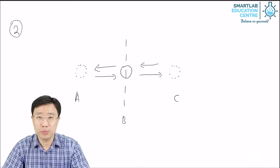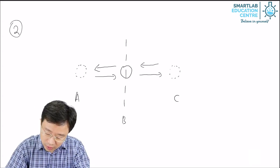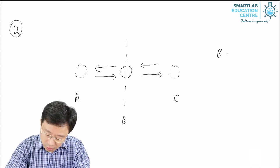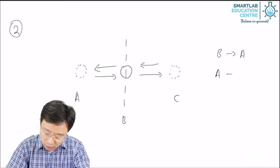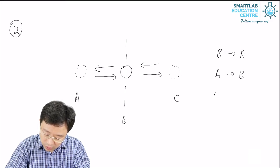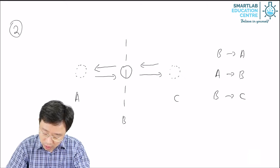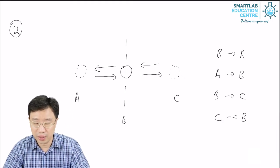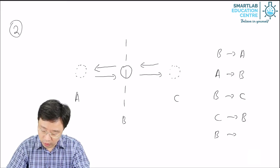If we write down the movements: B to A, A to B, B to C, C back to B, and after that you go from B to A.